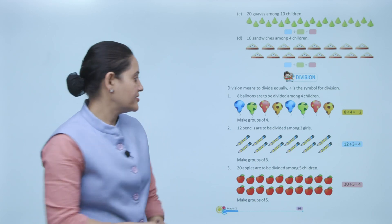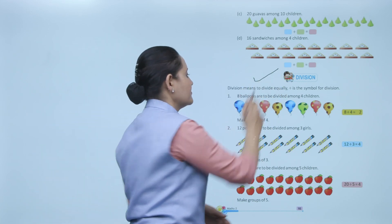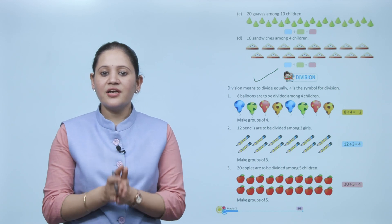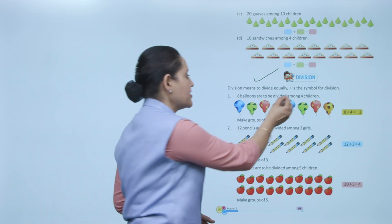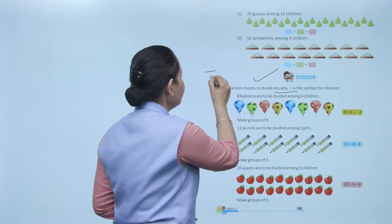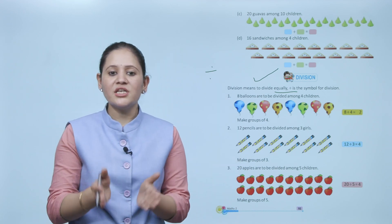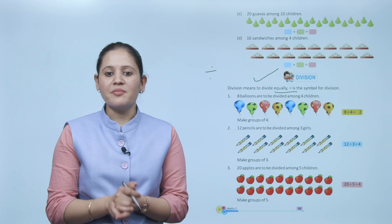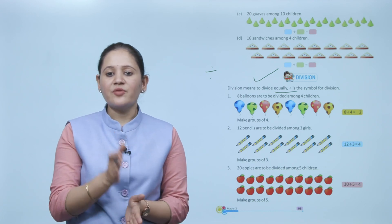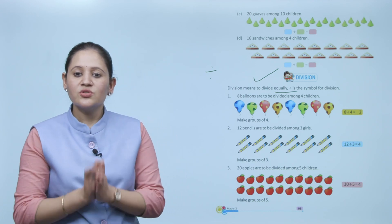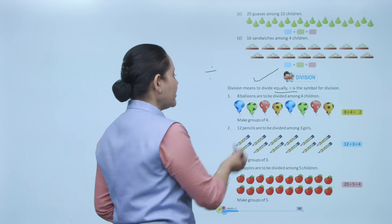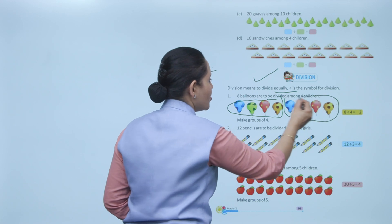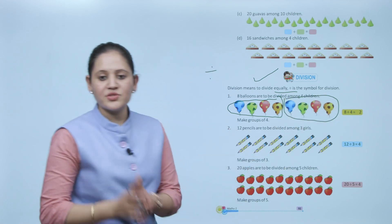Division means to divide equally. The symbol for division is '÷'. Eight balloons are to be divided among four children, that means 8 divided by 4. Make groups of four — there are two groups — so 8 divided by 4 equals 2.